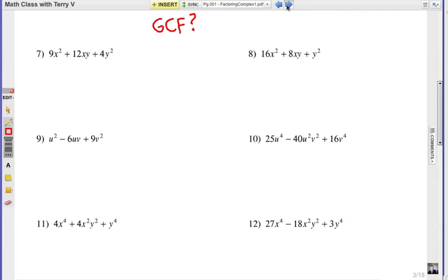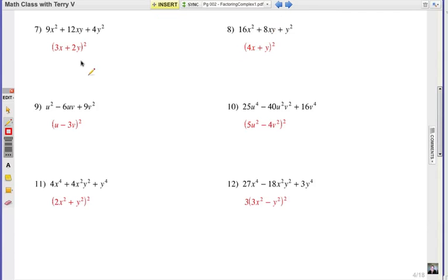Here we go, answers. Number seven, you're going to get 3x plus 2y, that whole thing is squared, two binomials multiplied by itself. Remember that the 9x squared came from 3x times 3x. 4y squared came from 2y times 2y. Now to test the middle term here, remember that it is double the product. So 3x times 2y is 6xy, and you double it to make 12xy. So operating in reverse, you check to make sure that that middle term fits the perfect square trinomial pattern.